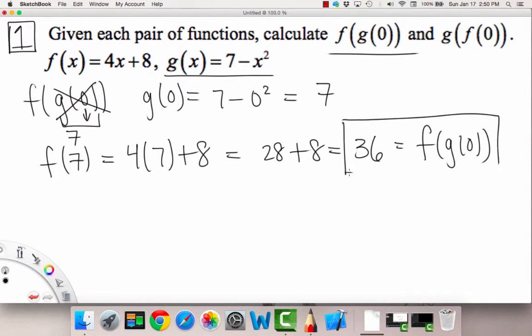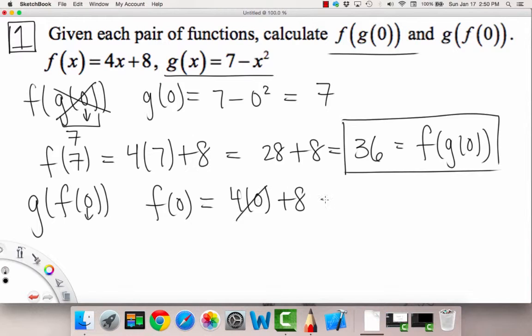There's the first part, and now we'll just do the second part, which is g of f of 0. In order to figure this out, we have again an initial input of 0, but this time the functions are swapped. Our inner function is now f, and our outer function is g. So what we have to do first is plug in 0 into f. When we do that, we get 4 times 0 plus 8. So this goes to 0, and we get f of 0 is equal to 8.